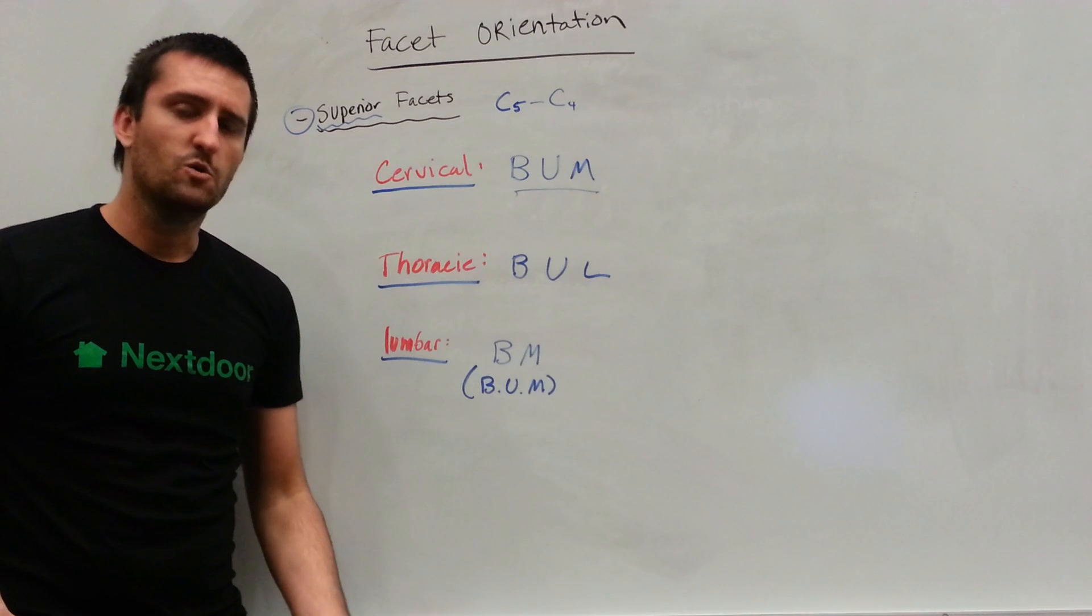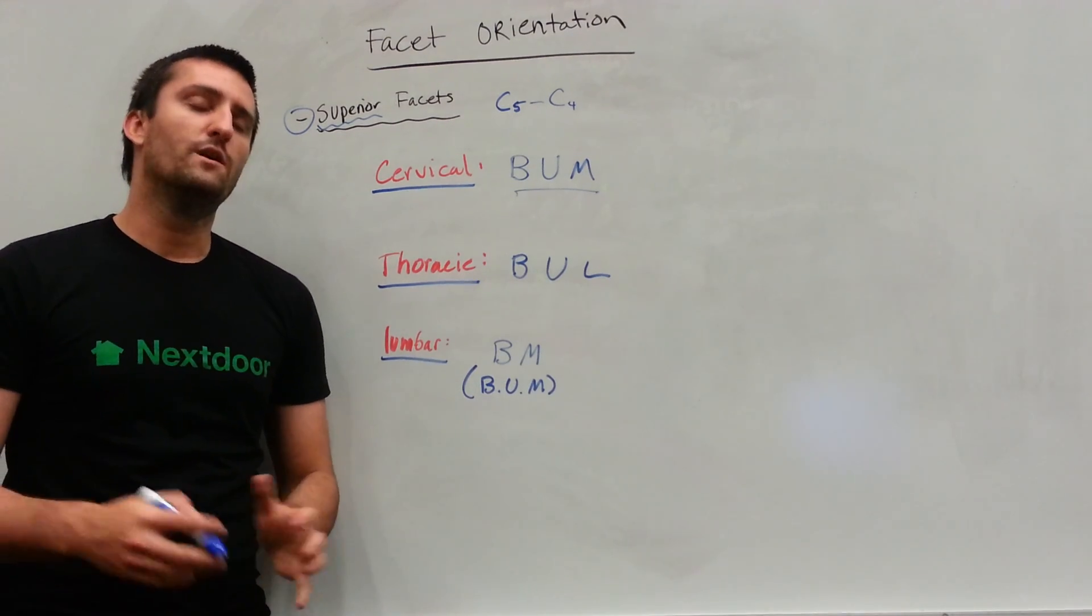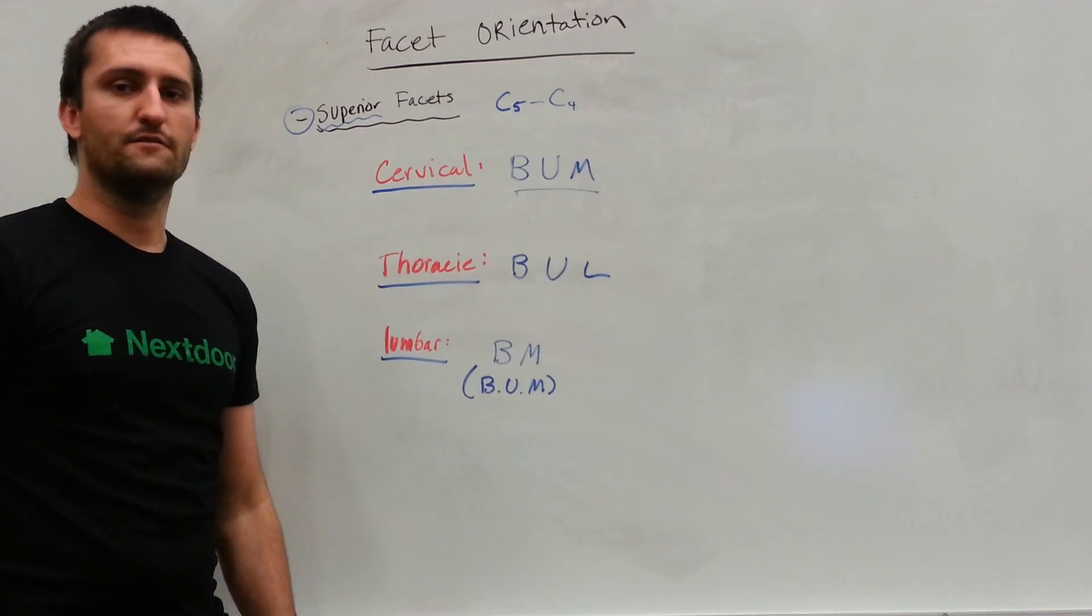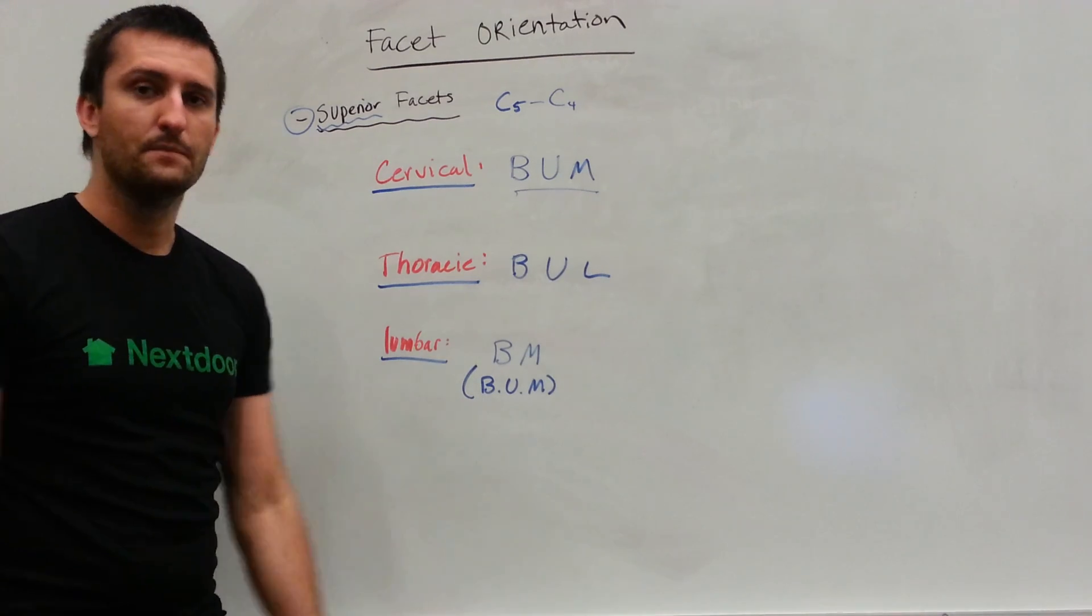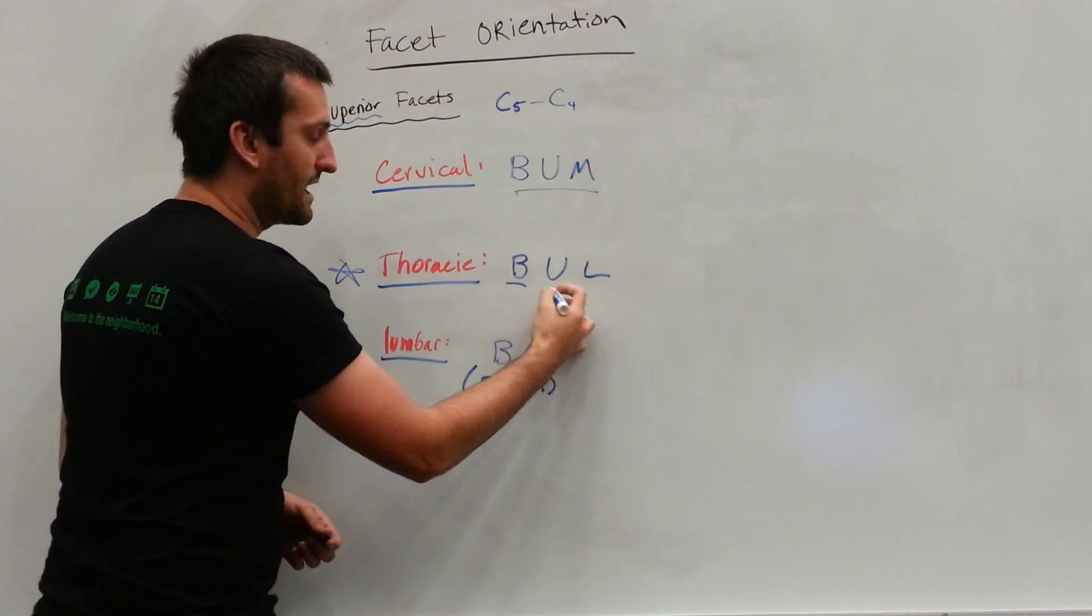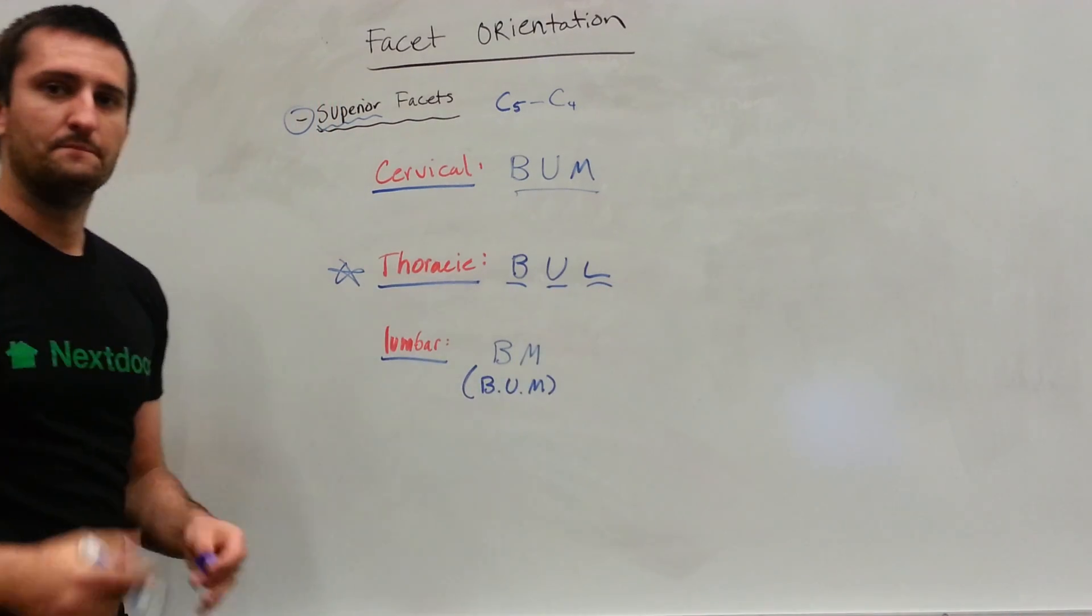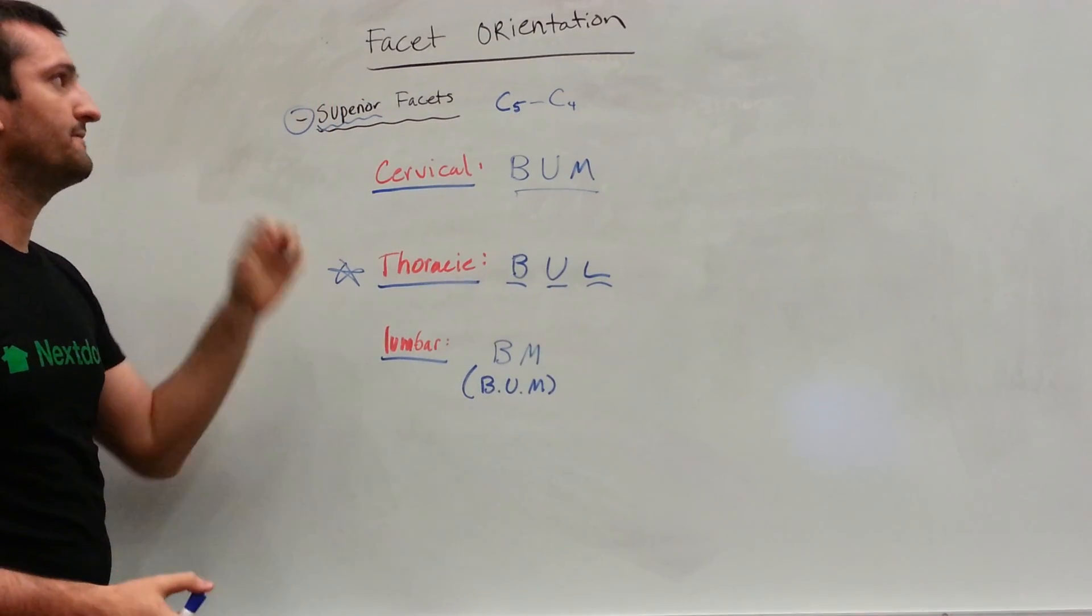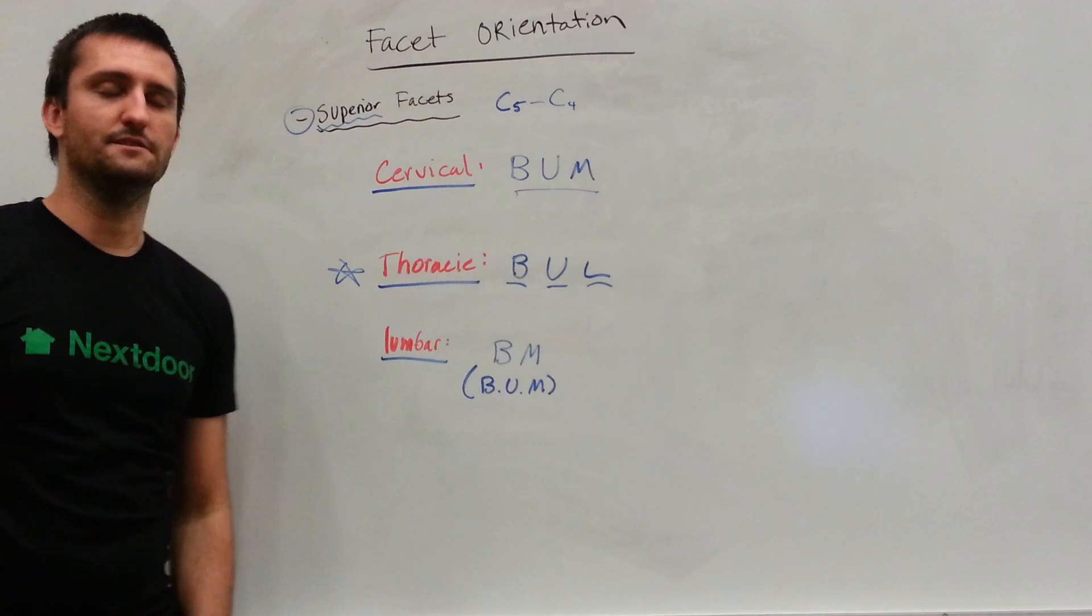So if on a test question, for example, you're asked what is the orientation of the facets of vertebral level T7, well, you know that you're in the thoracic region, so it'll be backwards, upwards, and laterally. So this is just a quick way to remember the facet orientation, a high yield topic.